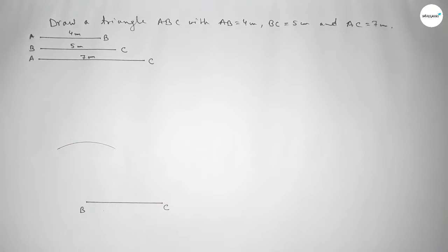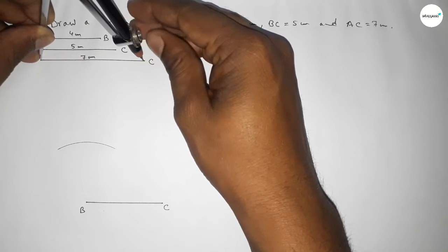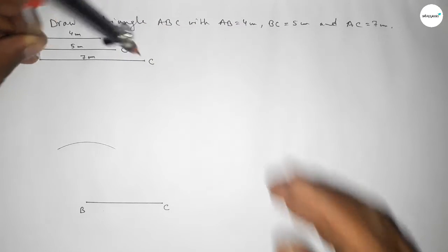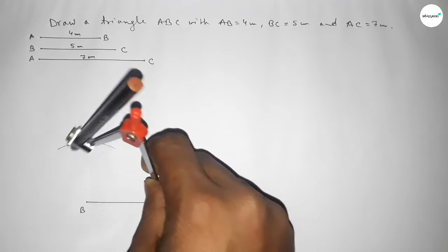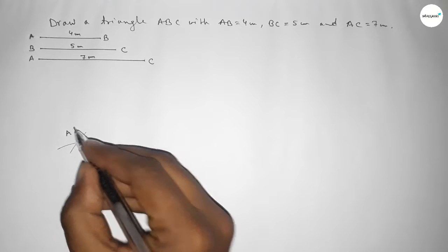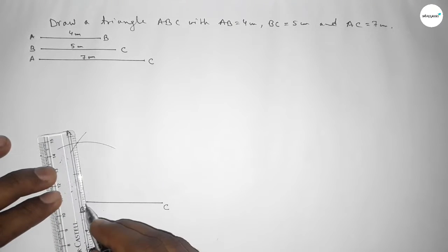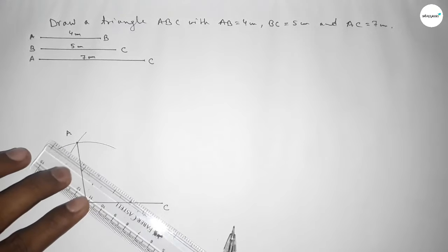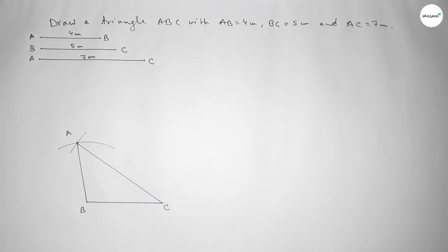Now taking the length 7 centimeter using the compass and placing the compass on point C, drawing another arc so that both arcs intersect. The intersection point is taken as point A. Now joining A and B, then joining A and C to complete the triangle.